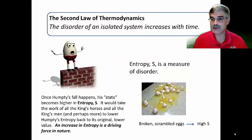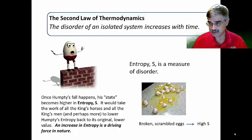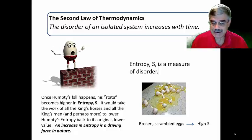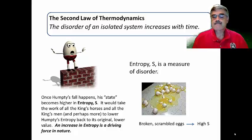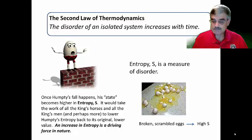We'll begin by pointing out the profound wisdom of the nursery rhyme about Humpty Dumpty. Humpty Dumpty sat on the wall. Humpty Dumpty had a great fall. All the king's horses, all the king's men, could not put Humpty back together again. Now, this is an allegory for entropy and the second law of thermodynamics.